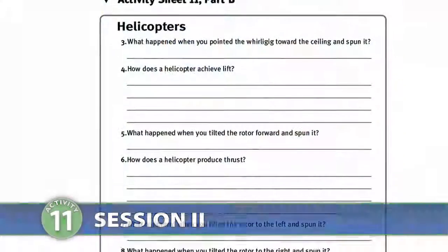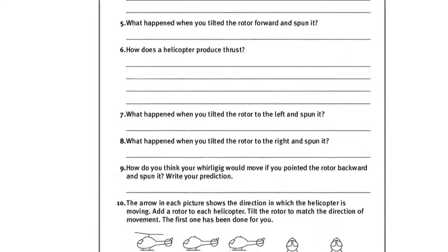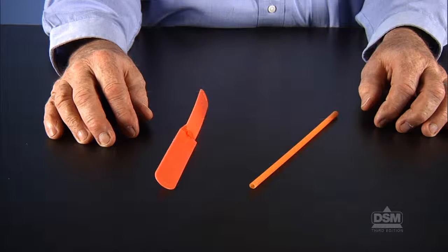To prepare for session two, make a copy of Activity Sheet 11, Part B for each student. Each team of two will need a whirligig. Students will also need to refer to Part A.